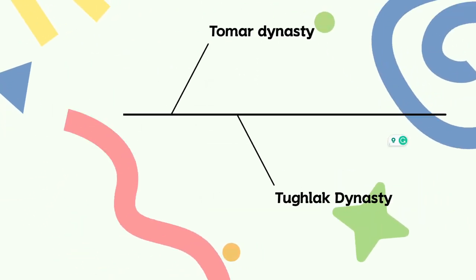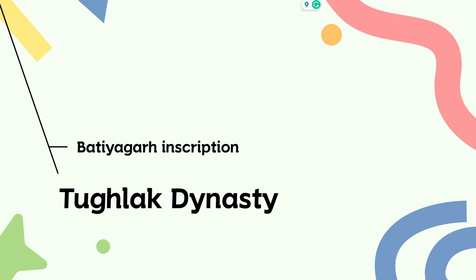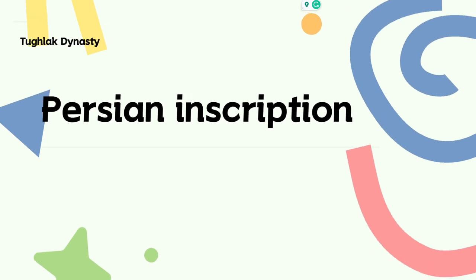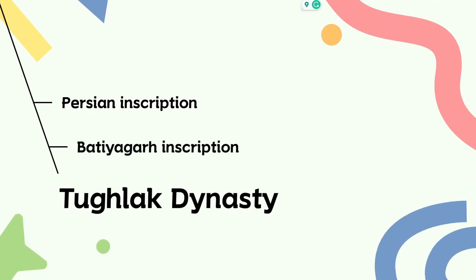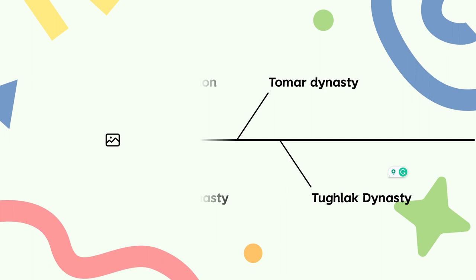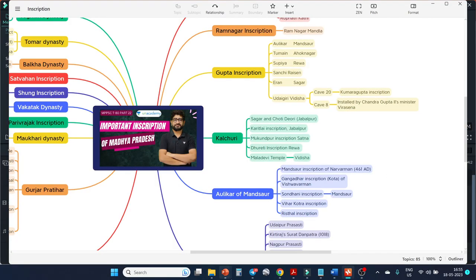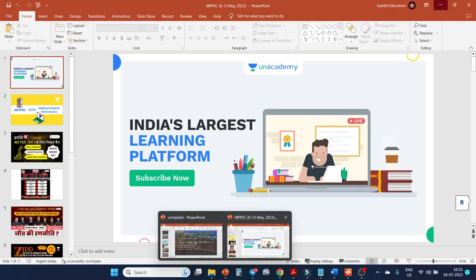For the Tughlaq dynasty, there is only one inscription — the Batiyagarh Shilalek — which gives basic information about their dynasty. Then there is a Persian language inscription located in Damoh, which was written in Persian script. All these inscriptions are related to the kingdoms of Madhya Pradesh.